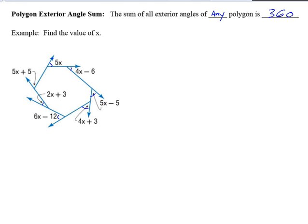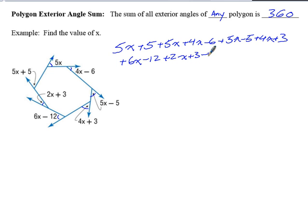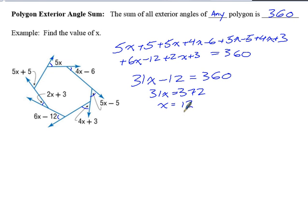So for this problem here, it says find the value of x. We're going to do the same exact thing that we just did on the last problem. We're going to add all of this stuff together and set it equal to 360. So for this, we're going to say 5x plus 5 plus 5x plus 4x minus 6 plus 5x minus 5 plus 4x plus 3, 6x minus 12 plus 2x plus 3, and then that equals 360. So when I simplify all of that down, I get 31x minus 12 equals 360. So I'm going to add 12 to both sides, giving me 31x equals 372. Divide both sides by 31, and you get x equals 12.